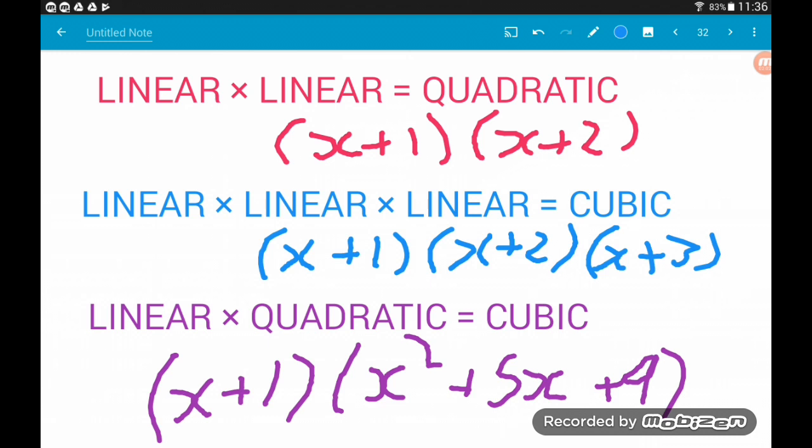So a linear times a linear factor will give us a quadratic expression. A linear times a linear times a linear would give us a cubic, and a linear times a quadratic factor is going to give us a cubic too. So sometimes we're going to be finding cubic expressions or equations where we can only factor out one linear factor and then we've got a quadratic factor that has no linear factors.